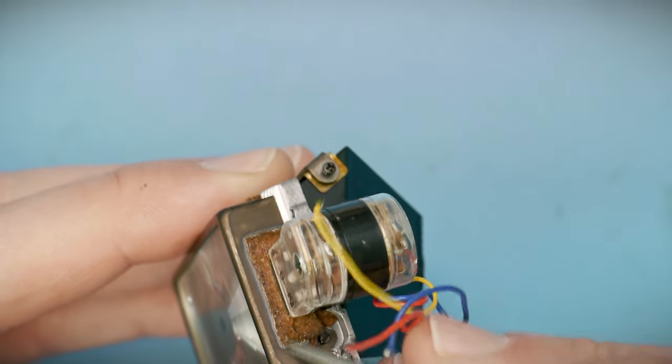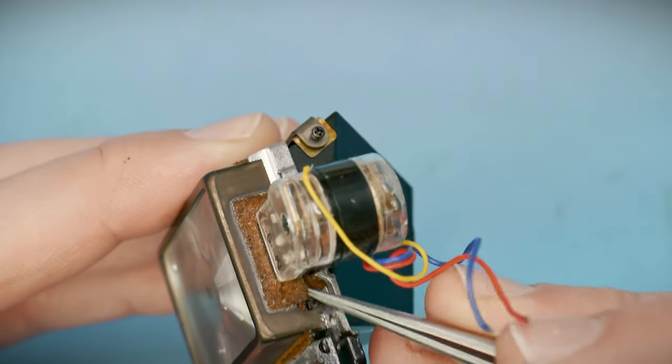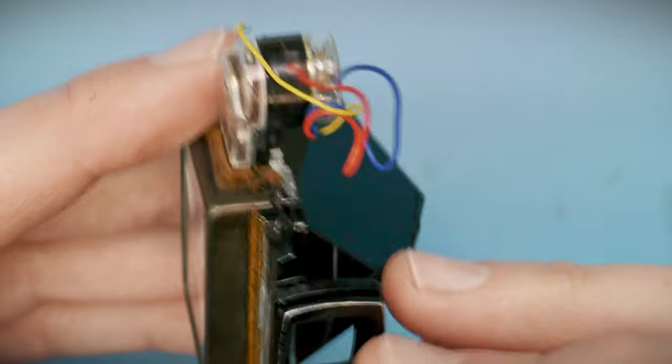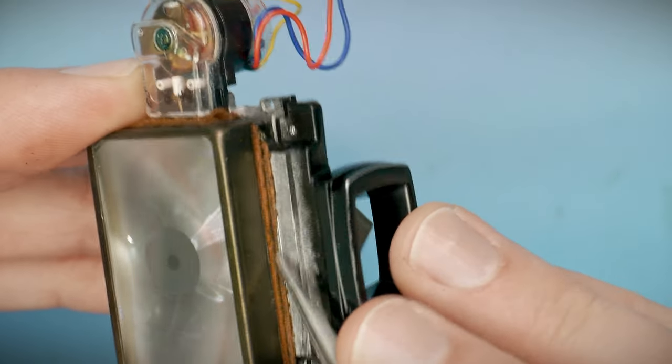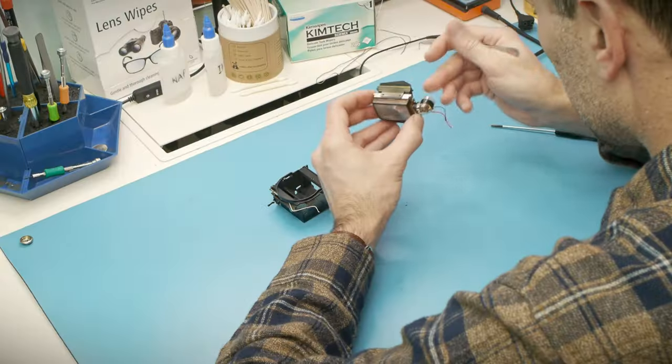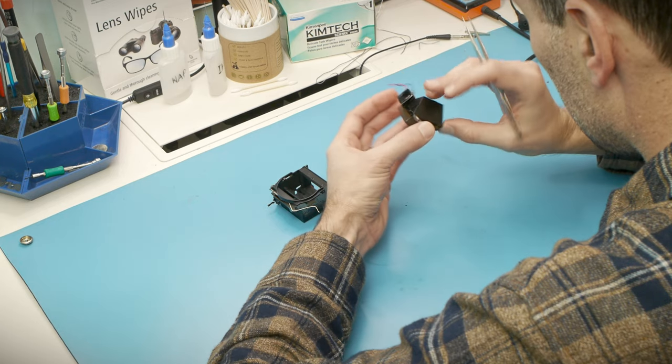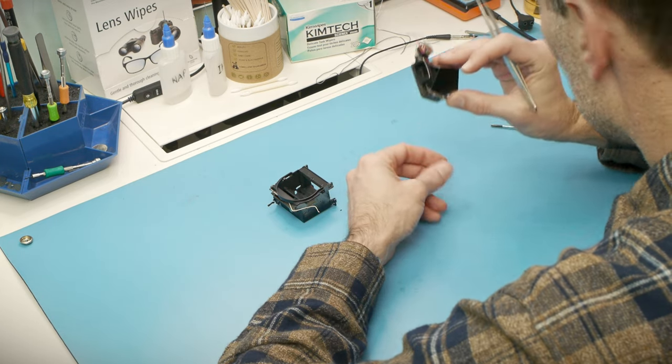This orange stuff is an old light seal, but it's more goo than foam now. I'll be doing a full overhaul of this whole unit, cleaning out the old foam and installing new material, but that will be another video. For now, I'm going to focus on the mechanisms on the side of the mirror box.